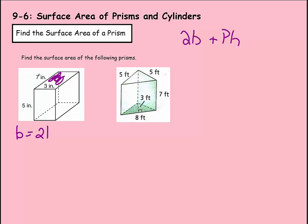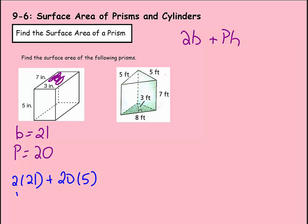The perimeter would be 7 times 2, which is 14, plus 3 times 2, which is 6. So P equals 14 plus 6, which is 20. Plugging in: 2 times 21 plus 20 times 5. Two times 21 is 42, and 20 times 5 is 100. The total surface area, then, would be 142 square inches.